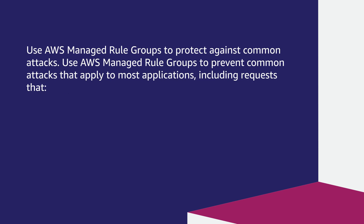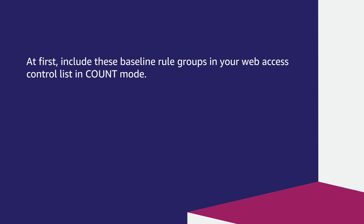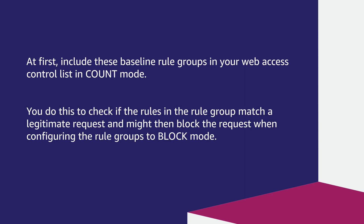Use AWS managed rule groups to protect against common attacks. Use AWS managed rule groups to prevent common attacks that apply to most applications, including requests that don't contain a user agent, represent requests that use localhost as the HTTP host header, or use the PROPFIND HTTP method. At first, include these baseline rule groups in your web access control list in count mode, to check if the rules match legitimate requests before configuring the rule group to block mode.